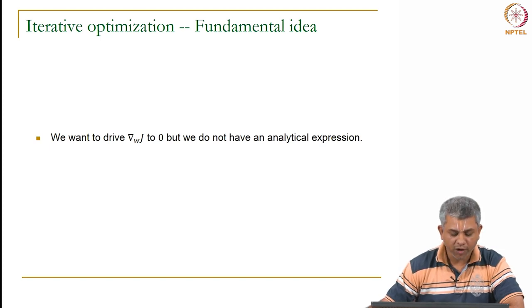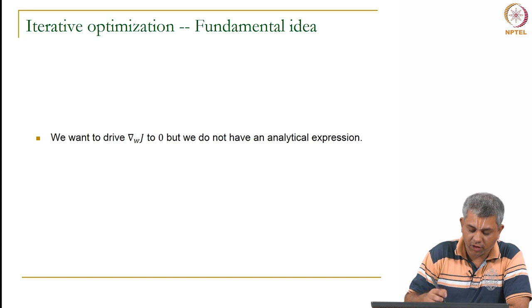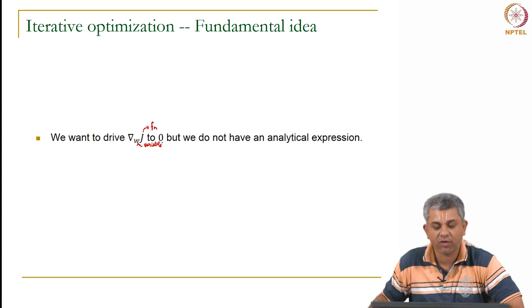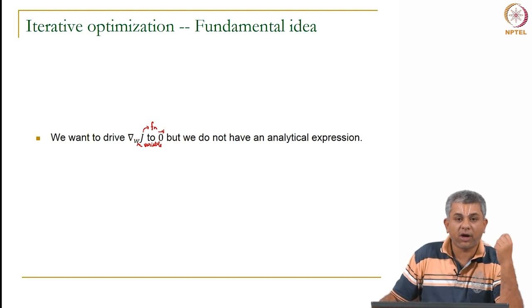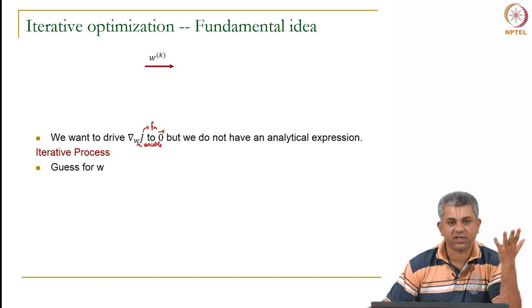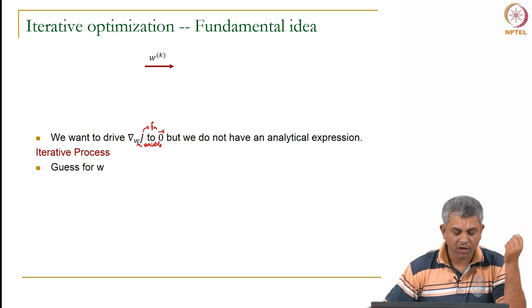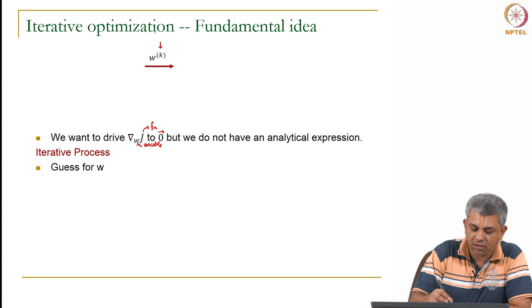Here is a simple idea. What you want to do is drive the gradient of the function that you are trying to minimize or maximize to 0. We are using the notation where the function is j and the variable we are optimizing over is w. So grad j(w) — we want this to go to the zero vector, because remember the gradient is a vector. But we do not have an analytical expression for j. So the iterative process is as follows: you take a guess. The superscript k refers to the iteration number. This is always the iterative process in anything — not just optimization. Whichever variable you are trying to find, whether it is a linear system of equations or an optimization, you do not know the optimum w, so you take a guess.